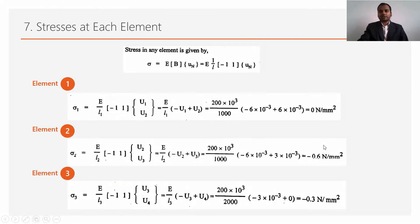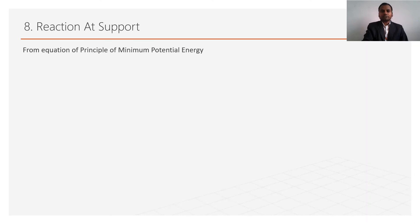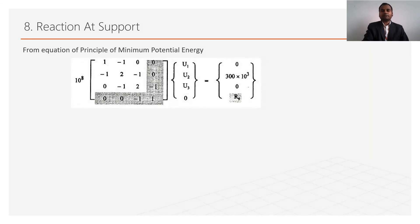These are the stresses calculated for all elements. Step 7 and the last step of finite element analysis is to find the reactions at the support. In this numerical, the body is fixed only at node 4. To find the reaction at node 4, we use the principle of minimum potential energy equation again; from the last row we can get R4.